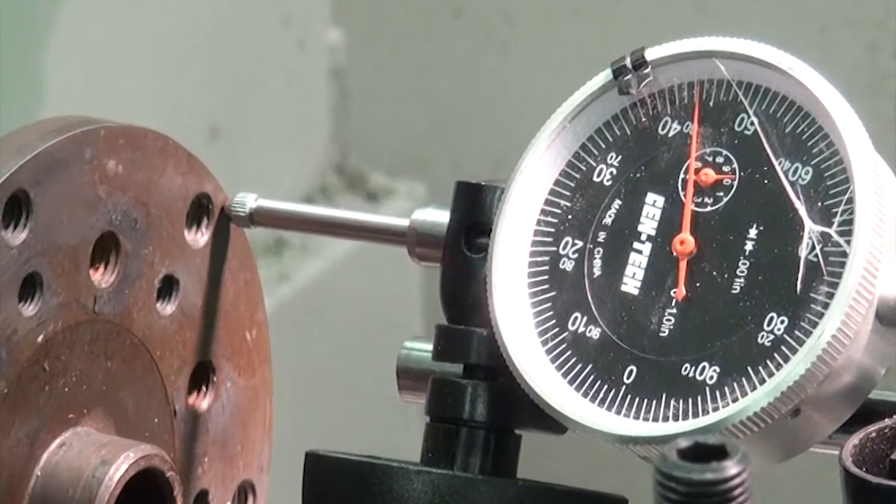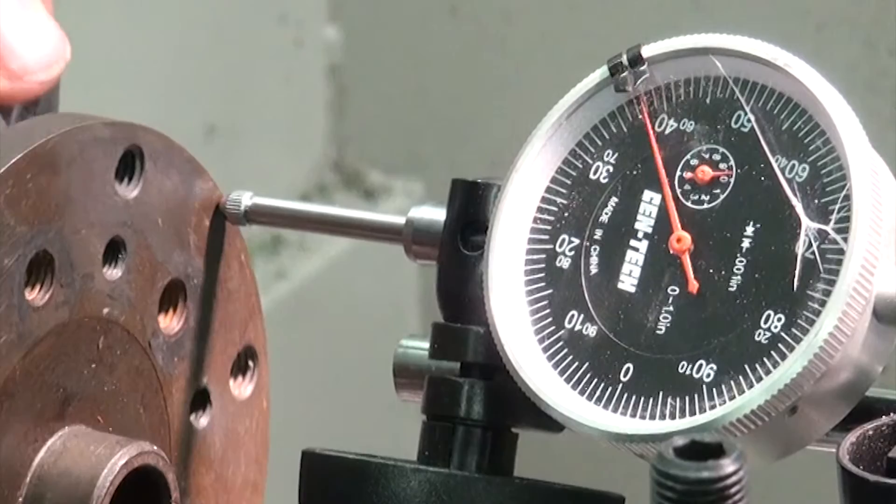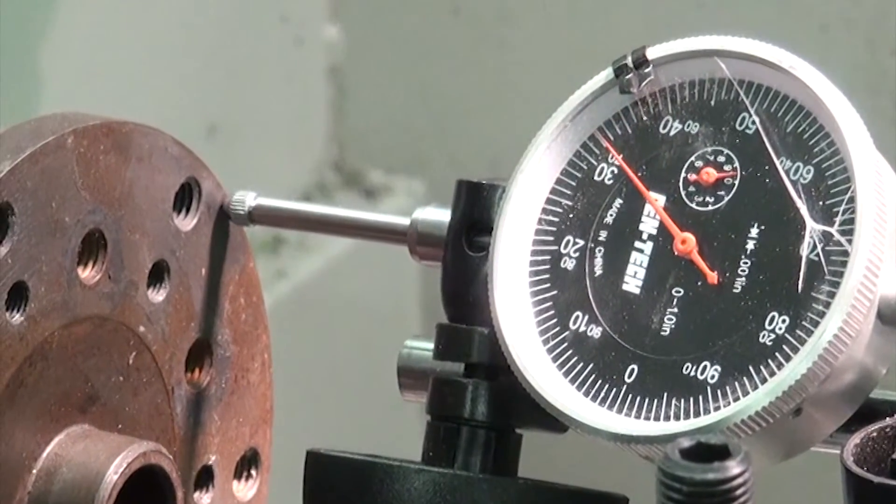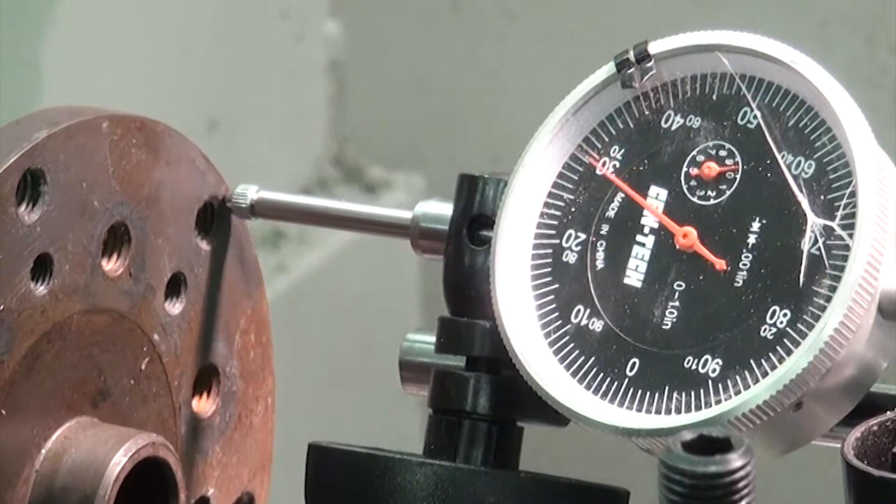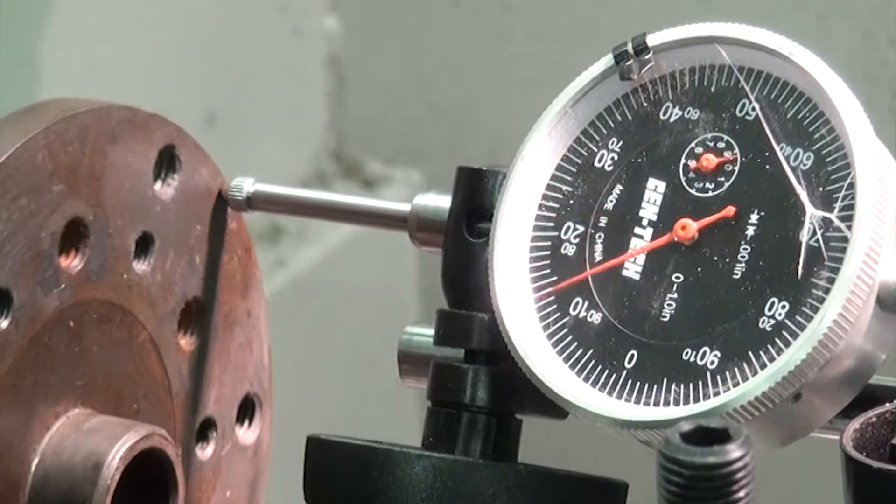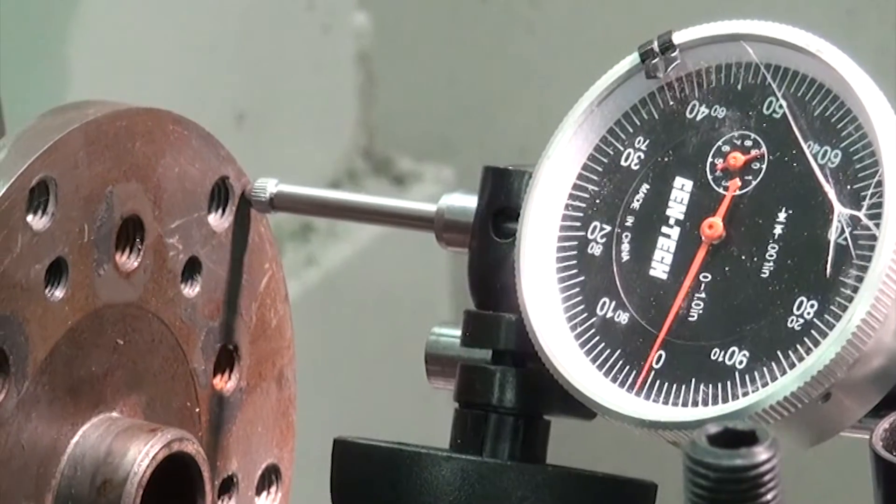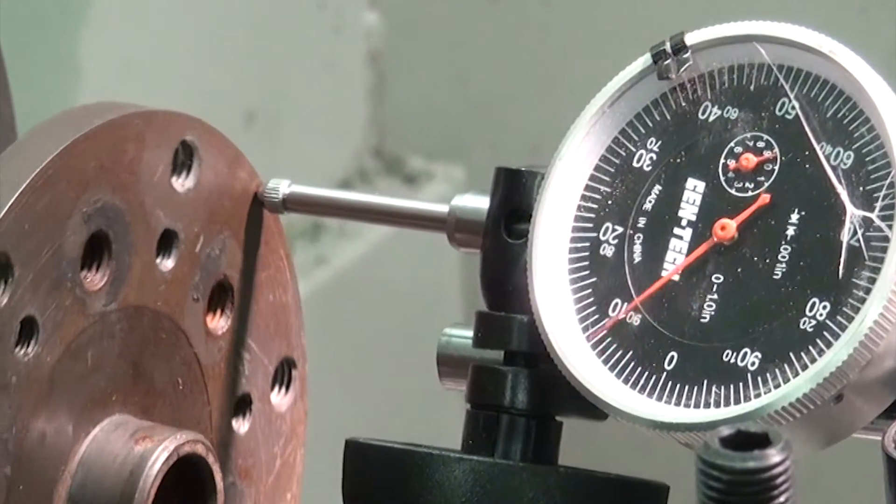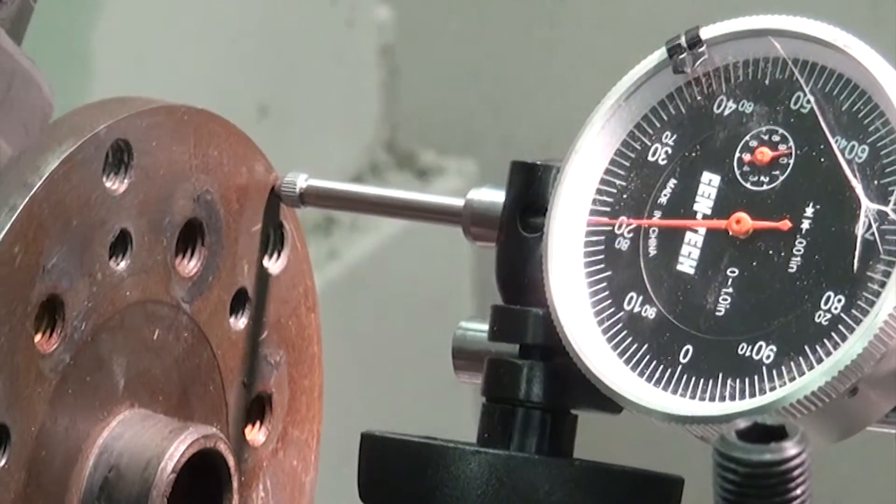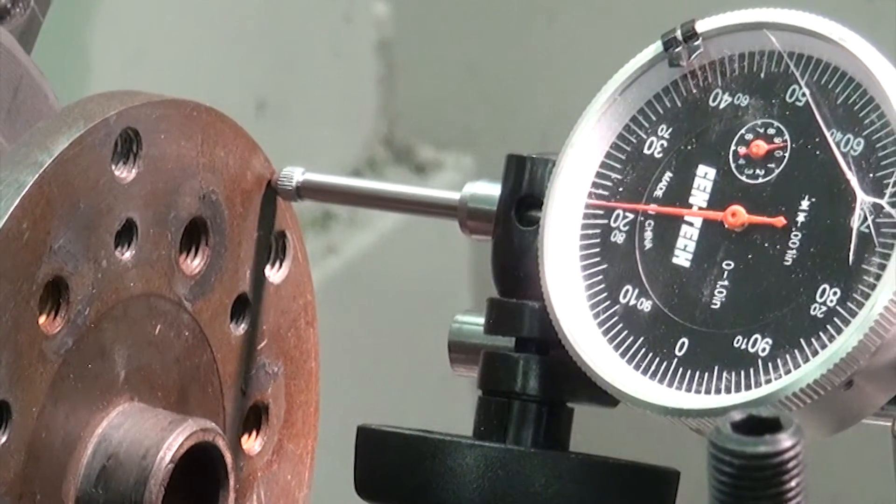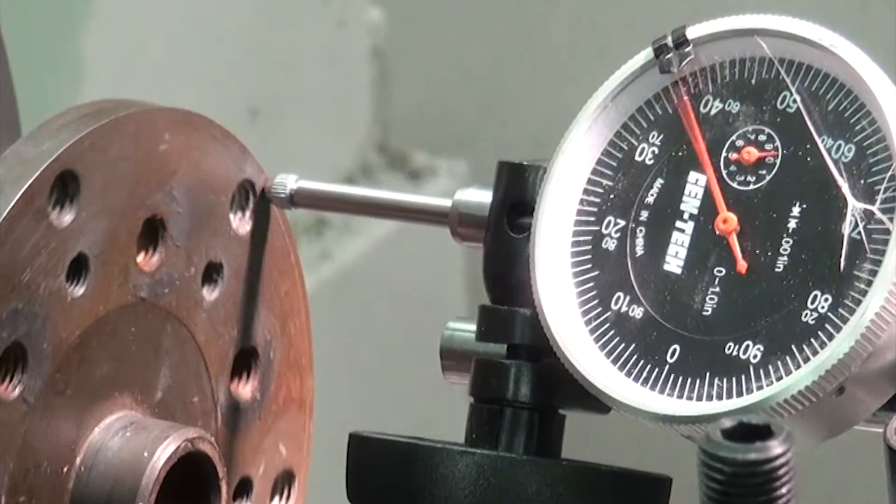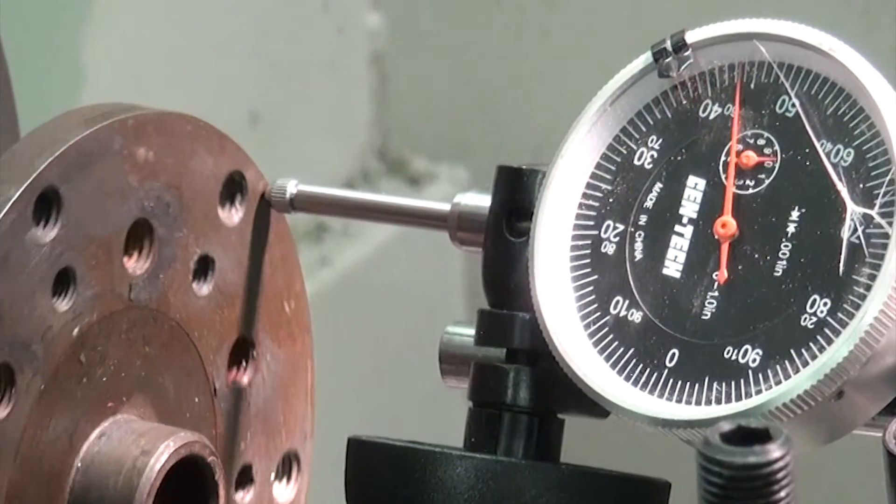We're typically talking only a thousandths or less on the run-out of the prop flange under normal circumstances. But any time that you've had a prop strike, you're going to be doing this procedure to check just to see if the damage to the prop flange is outside of the tolerances within the Rotax manual. You can also do this on the rear side of the prop flange while it's still bolted to the aircraft.